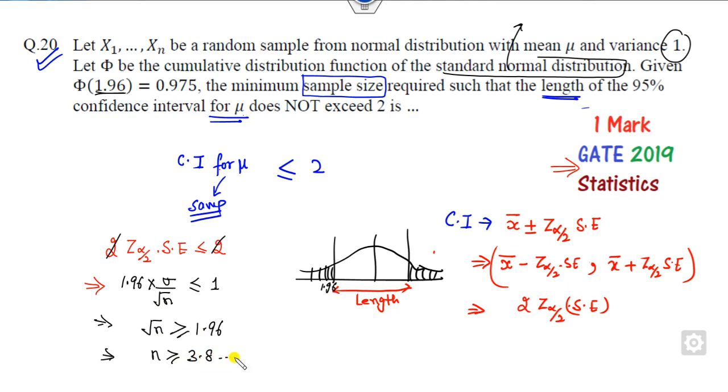If you square them it will be 3.8 something, but since we need a minimum value and sample size is always an integer, the smallest value which is satisfied here is 4, which is the required answer.